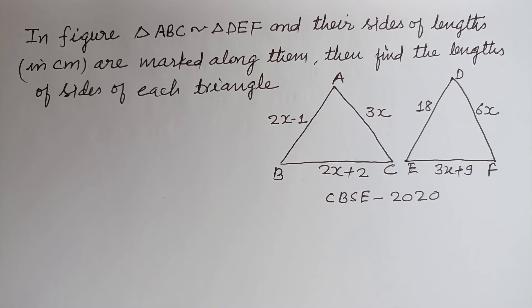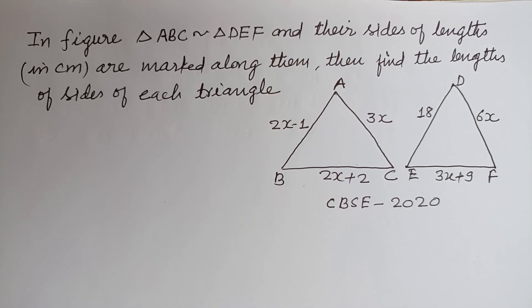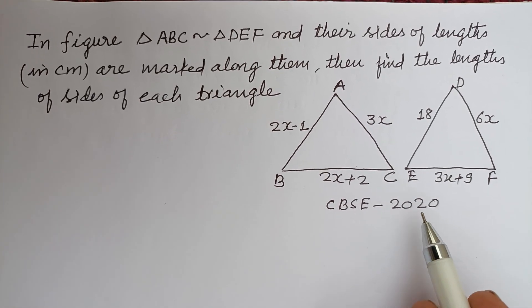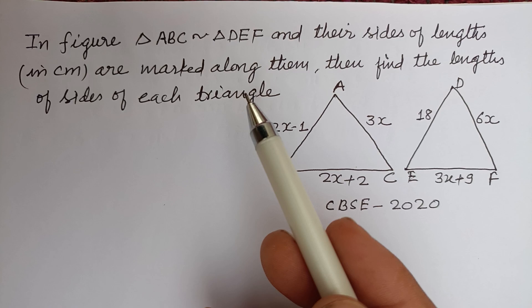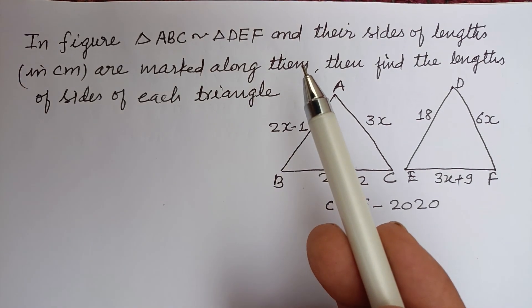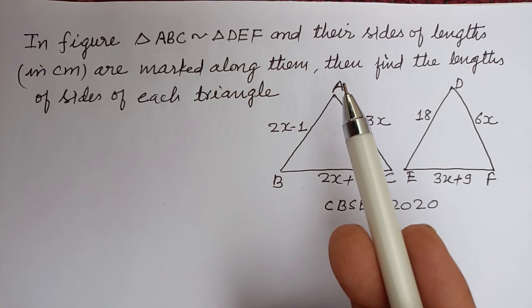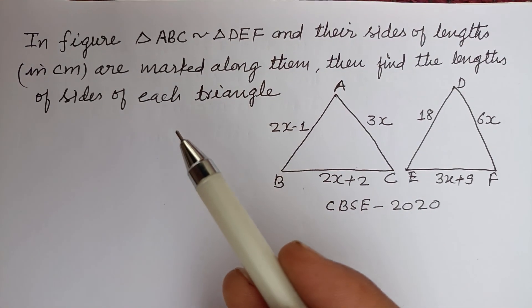Hello viewers, warm welcome to this YouTube channel. This is a question from CBSE Class 10 Board Exam 2020. In the figure, triangle ABC is similar to triangle DEF, and their side lengths in centimeters are marked along them. Then find the length of the sides of each triangle.